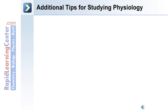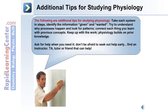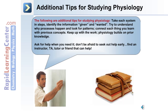Here are some additional tips for studying physiology. Take each system in steps. Identify the information given and wanted. Try to understand why processes happen and look for patterns — connect each thing you learn with previous concepts. It's also important to keep up with the work, as physiology builds on prior knowledge. Ask for help when you need it — don't be afraid to seek out help early. Find an instructor, TA, tutor, or friend that can help.